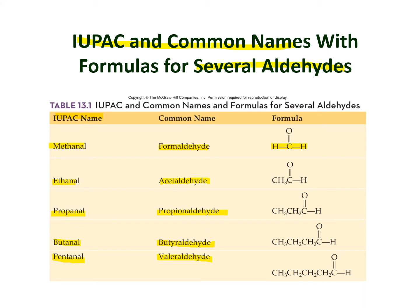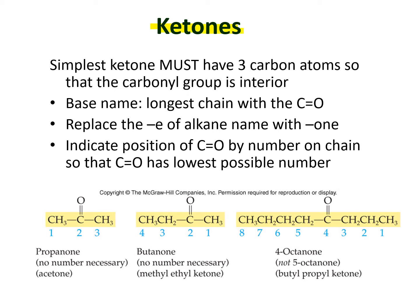For ketone IUPAC naming, an important difference to remember is that the simplest ketone must have at least three carbon atoms, since the central carbon must be attached to two R groups. The carbonyl group must be in the interior of the longest chain. Replace the final 'e' of the alkane name with 'one', and assign the keto group the lowest possible number.